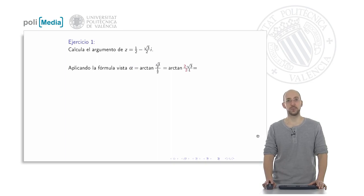At this point we can simplify the 2 of the numerator with the 2 of the denominator, so we would have to calculate the arctangent of the root of 3, which is pi thirds.